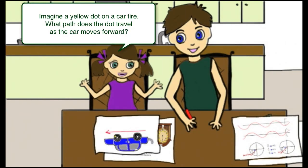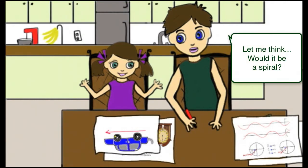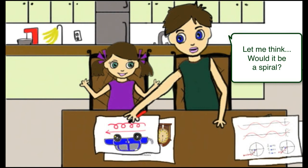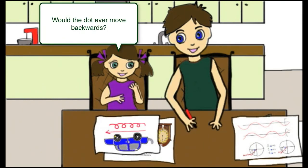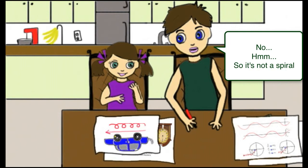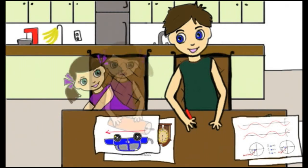Imagine a yellow dot on a car tire. What path does the dot travel as the car moves forward? Let me think. Would it be a spiral? Would the dot ever move backwards? No. So it's not a spiral.